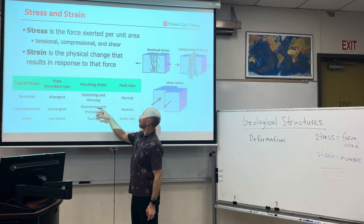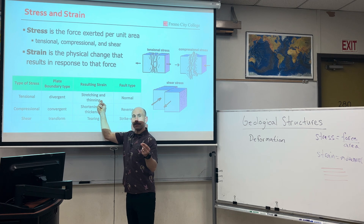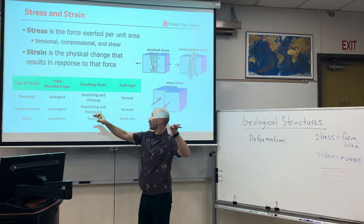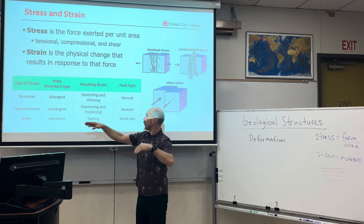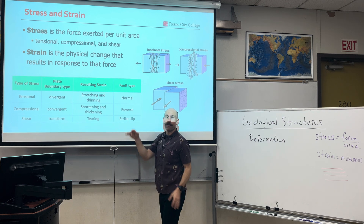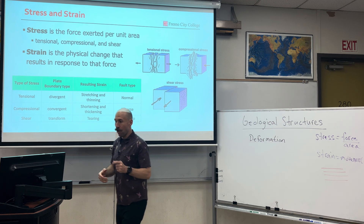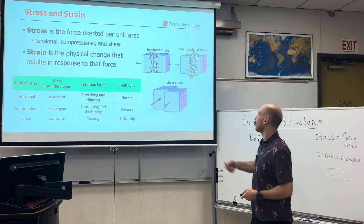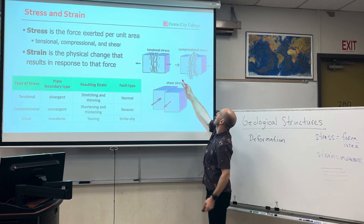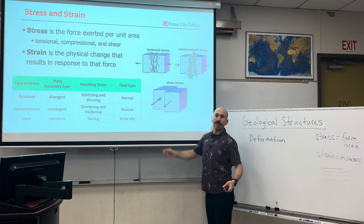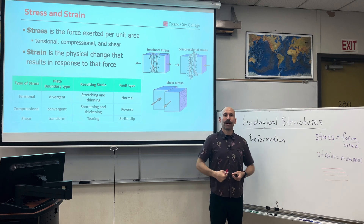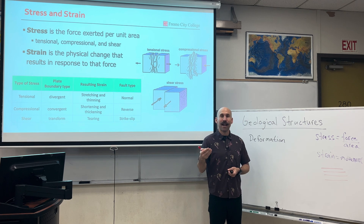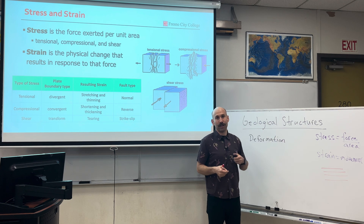These are going to give us a very specific type of movement or strain. Tension: stretching and thinning. Compression: shortening and thickening. Shear: tearing. This gives us different types of breaks in the rock called faults, and different types of bends in the rock when there is enough heat and pressure. Here we can see tension, compression, and shear. Essentially, regional tectonic forces acting on Earth's crust at plate tectonic boundaries result in geologic structures.